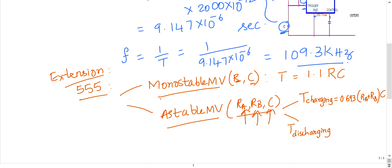This is time for charging, and time for discharging is 0.693 into Rb into C. If you add both time for charging and time for discharging, you will get total time. So the total time for operation of 555 timer as an astable multivibrator is 0.693 into (Ra plus 2 times Rb) into C.